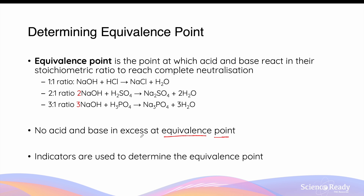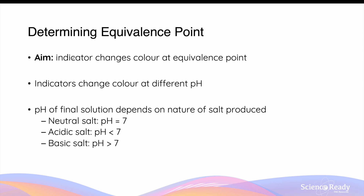In an acid-base titration, we typically use indicators to determine when this equivalence point will occur, as this will give us information to help us calculate the concentration of either an unknown acid solution or base solution. So when we're picking an indicator, the aim is so that the indicator will change colour when the equivalence point of the titration occurs. Since indicators change colours at different pHs, we have a wide variety of indicators to choose from. The pH of the final solution during titration at the equivalence point is an important factor to consider when choosing an appropriate indicator.